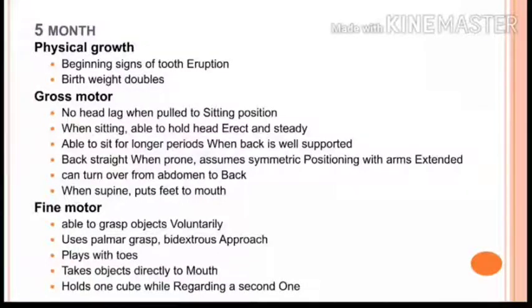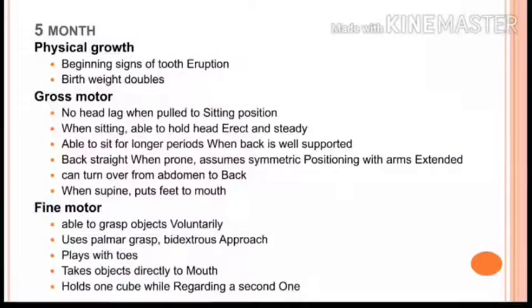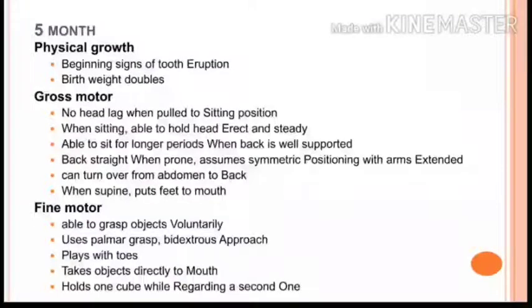For the five-month-old child's physical growth, the main points you need to keep in mind are those you can differentiate from the previous milestone. Key points: tooth eruption begins, and birth weight doubles — so if the birth weight was 2.5 kg, at five months the baby will weigh approximately 5 kg.